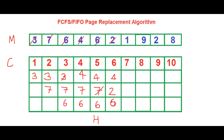The next one which wants to come in is 1. There's no space left, so we cancel out the oldest one — which is 6 — and write 1. The cache is now 4, 2, and 1. The next one is 9, so we cancel out 4 as that's the oldest one. The cache becomes 9, 2, and 1.